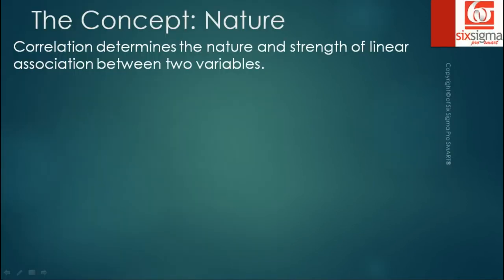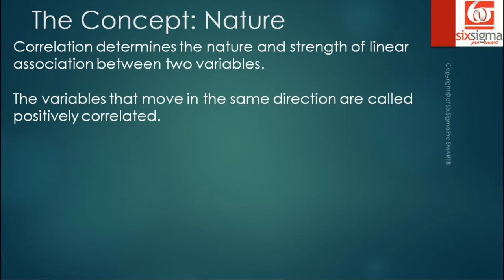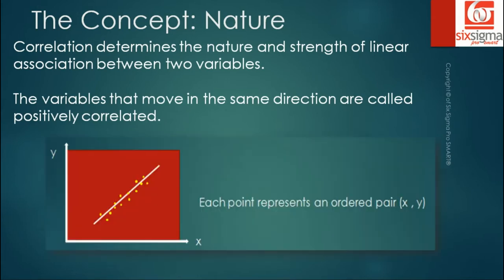To put it in simple terms, correlation determines the nature and strength of association between two variables. The variables that move in the same direction are called positively correlated. You can see there is an x-axis and a y-axis. We have a variable x and as x is increasing, there is an increase in y as well. All these points, the yellow dots that you see on the plane, represent an ordered pair x and y.